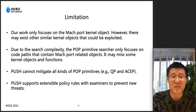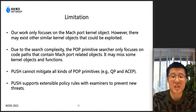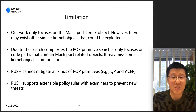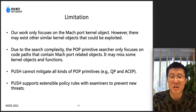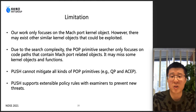Here are the limitations of our system. First, our work only focuses on the Mach port kernel object; however, there may exist other similar kernel objects that could be exploited. Second, due to search complexity, the POP primitive searcher only focuses on code paths containing Mach port-related objects, so it may miss some kernel objects and functions. Third, PUSH cannot mitigate all kinds of POP primitives — for example, it does not intend to prevent arbitrary code execution primitives, as that is not a necessary step in the POP attack. Also, we cannot prove the system can block every new attack. Fortunately, PUSH supports extensible policy rules with examiners to prevent new threats.